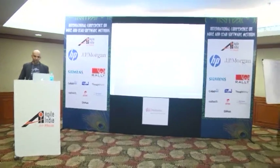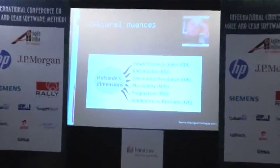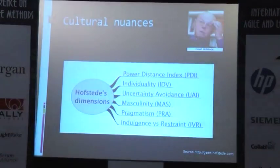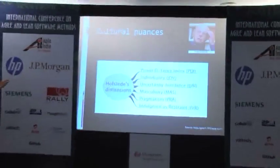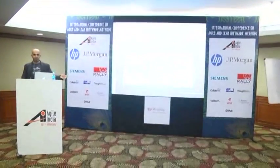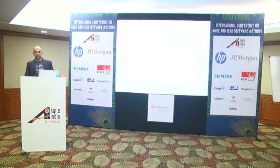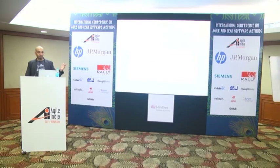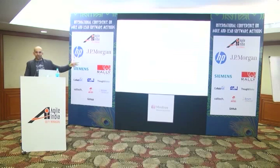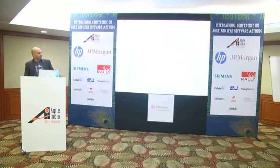Geert Hofstede is a professor in sociology, and there are a couple of other tools available — like GLOBE and MARS — which create dimensions to identify cultural differences. Hofstede originally proposed four dimensions, which later became six: the Power Distance Index, Individualism, Uncertainty Avoidance, Masculinity, Pragmatism, and Indulgence versus Restraint. All this data comes from years of study on the World Values Survey — an open data project available for 90 countries.